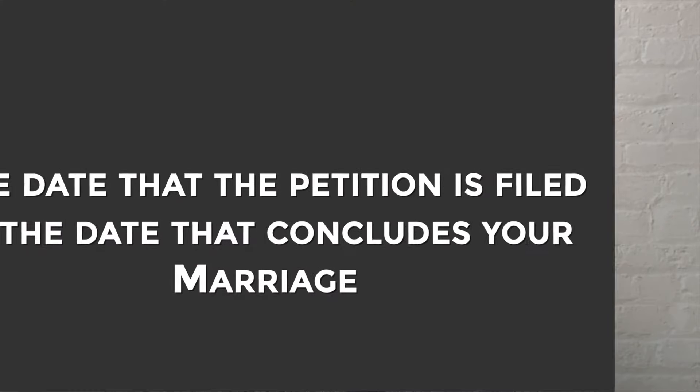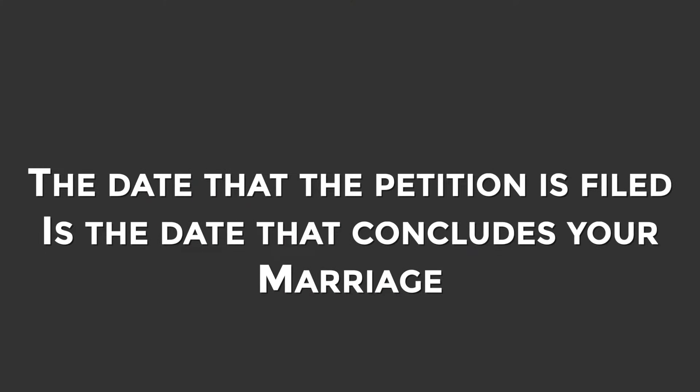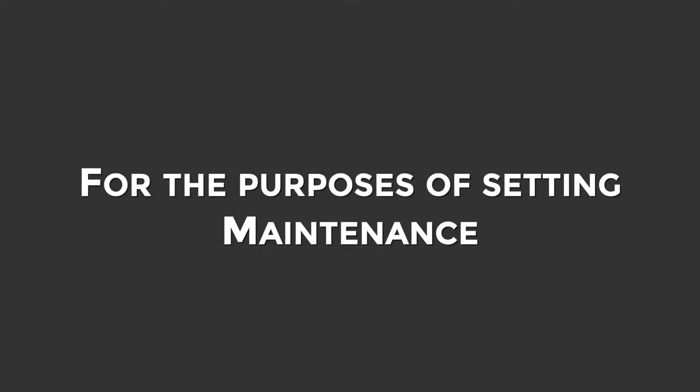A couple of important things to know: the date the petition is filed is the date that concludes your marriage for the purposes of setting maintenance — formerly known as alimony in Illinois. The length of your marriage is from the date you married until the date you file, and that length of time is used to determine the length of maintenance. On our website and other places we describe how maintenance is determined, and we have the ultimate guide to maintenance in the description below.